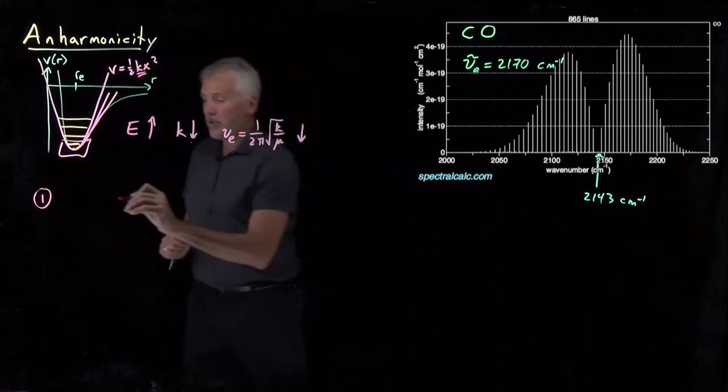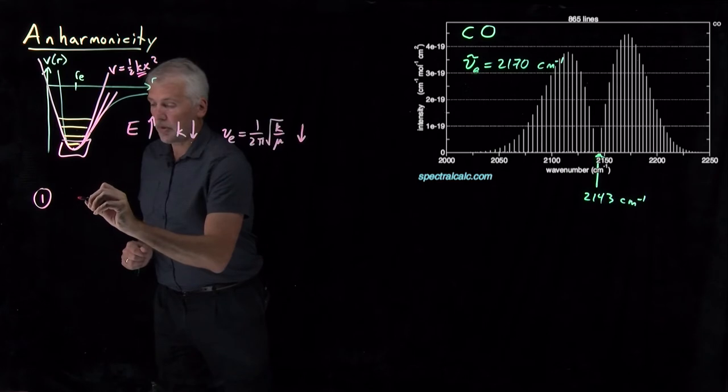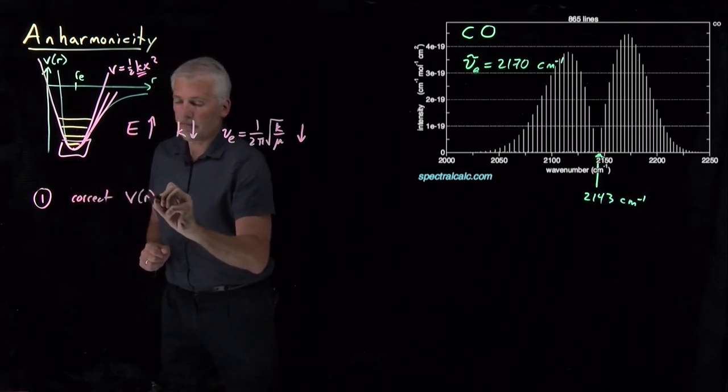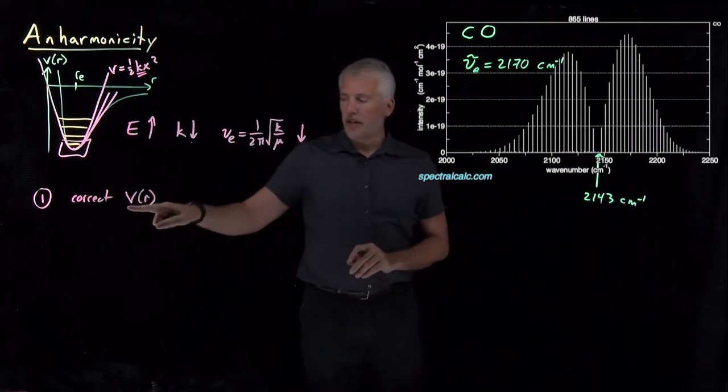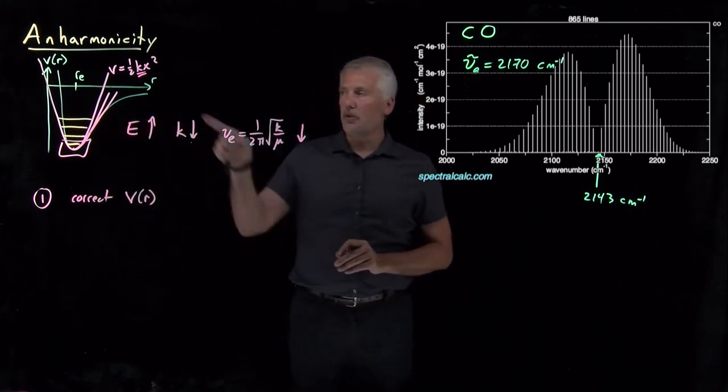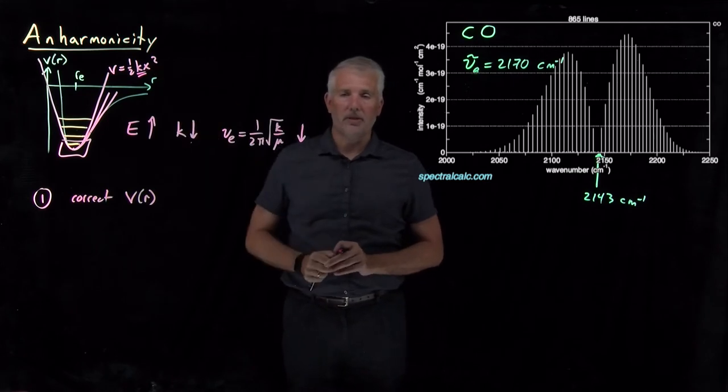One is we could use the correct, the actual potential energy function. If I could write down for you the actual potential energy function of this green curve as opposed to the pink approximate harmonic oscillator approximation, we could plug that into Schrödinger's equation.